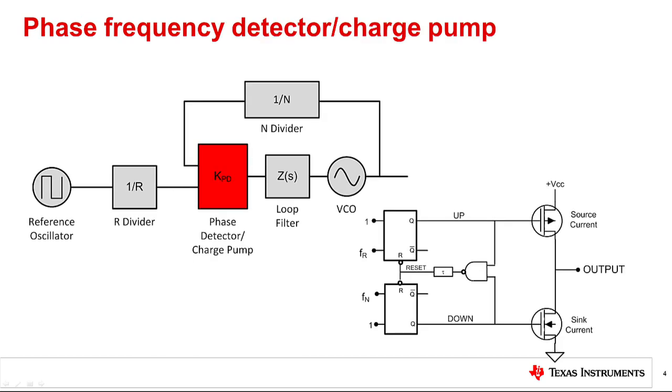Usually, the phase frequency detector, or PFD, and charge pump are integrated together. Together, they steer the voltage at the loop filter to drive the VCO to the right frequency. The phase frequency detector compares the output of the N and R dividers and converts this to a correction voltage. The charge pump converts this correction voltage into a correction current.